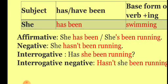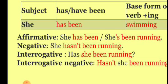For negative, the structure is: subject plus have/has plus not plus been plus base form of verb plus -ing. For example: She hasn't been running.